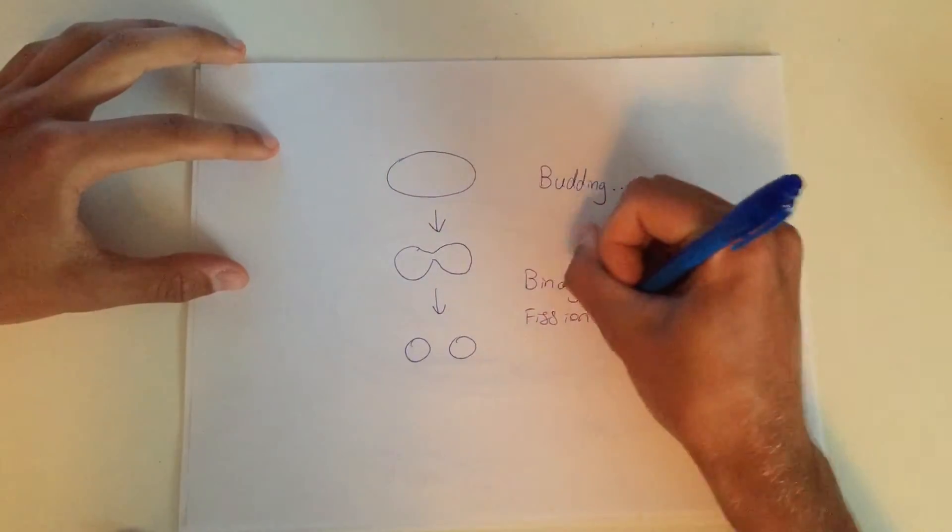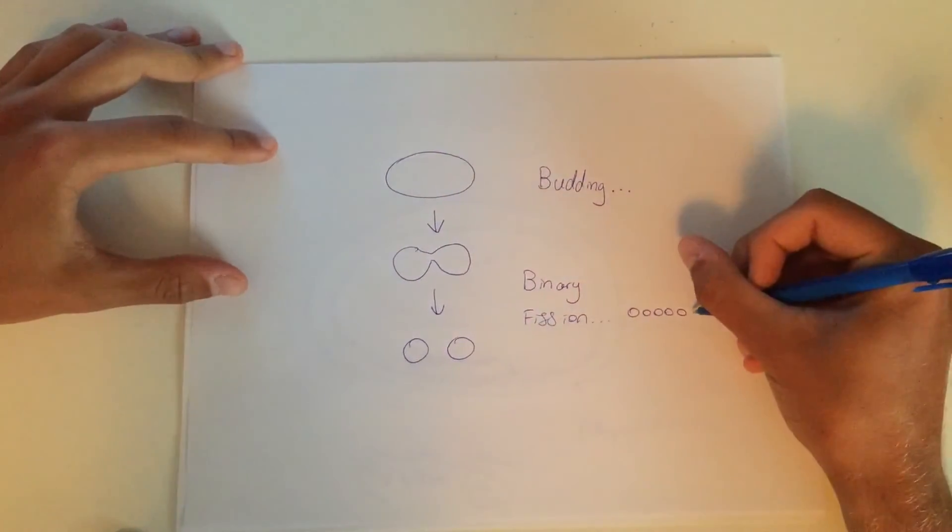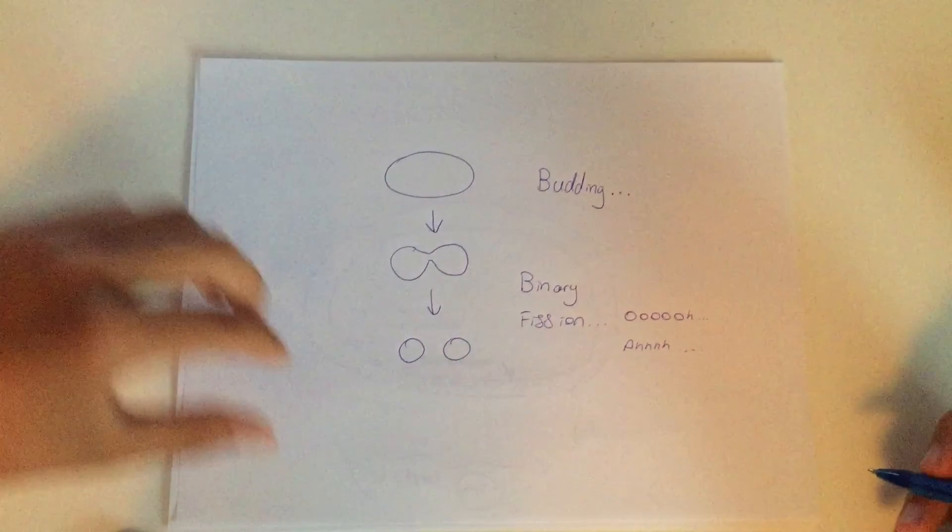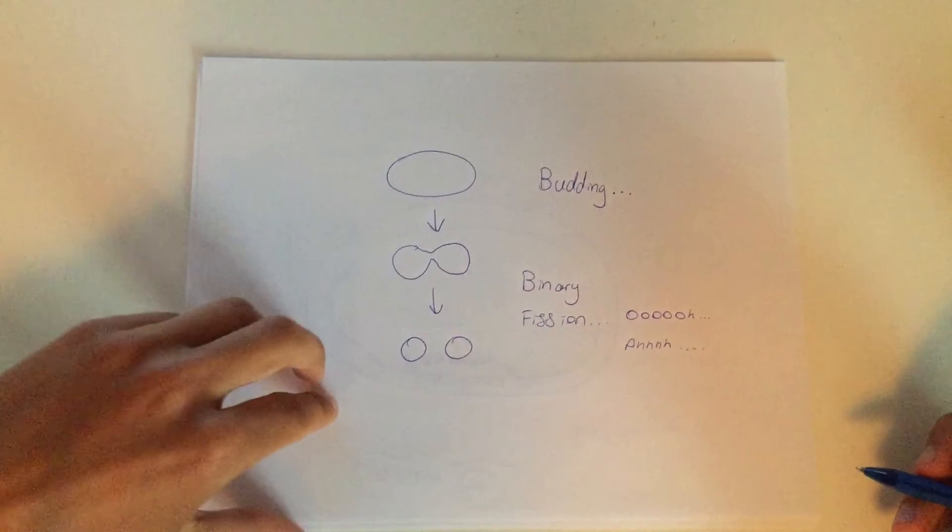However, in this bacteria that we're talking about, the peptidoglycan cell wall is split directly down the middle. This process is called binary fission and occurs in most bacteria.